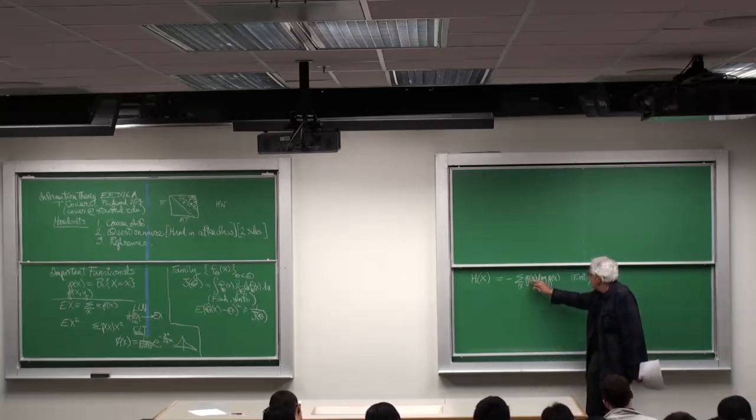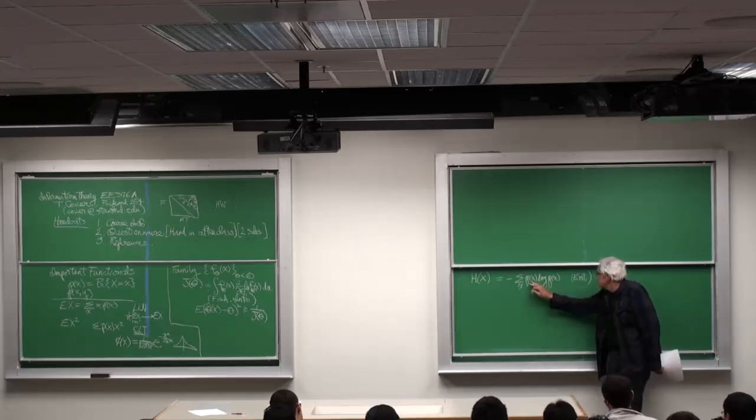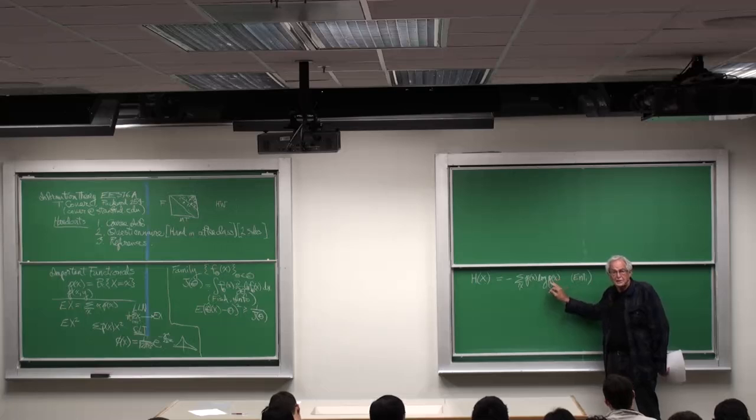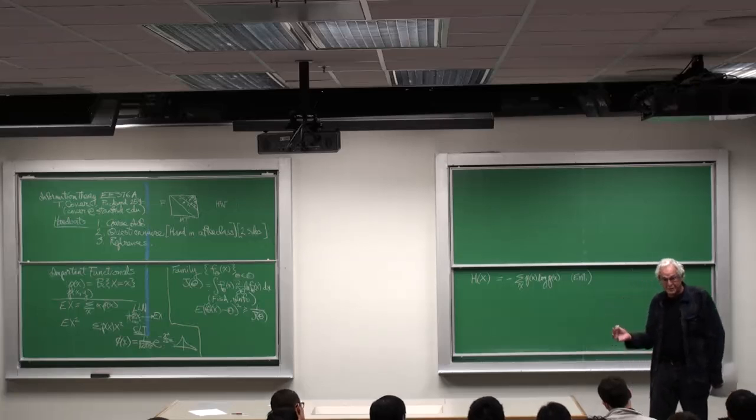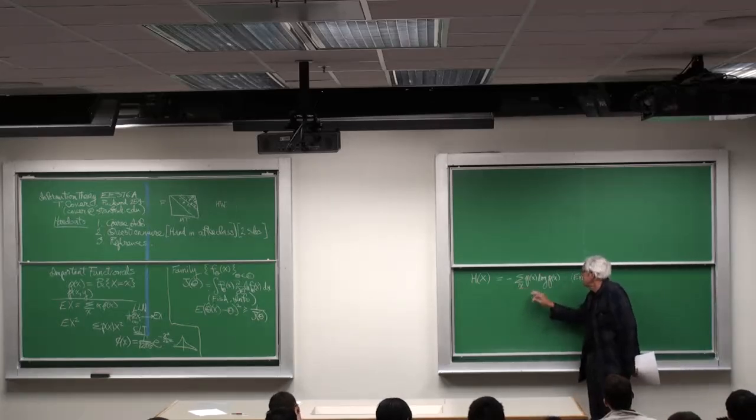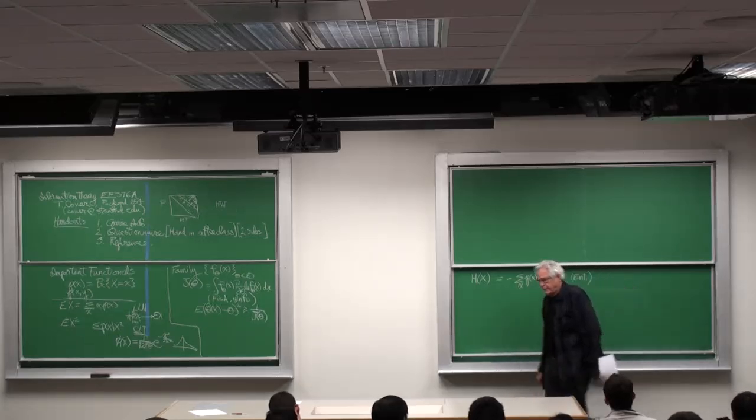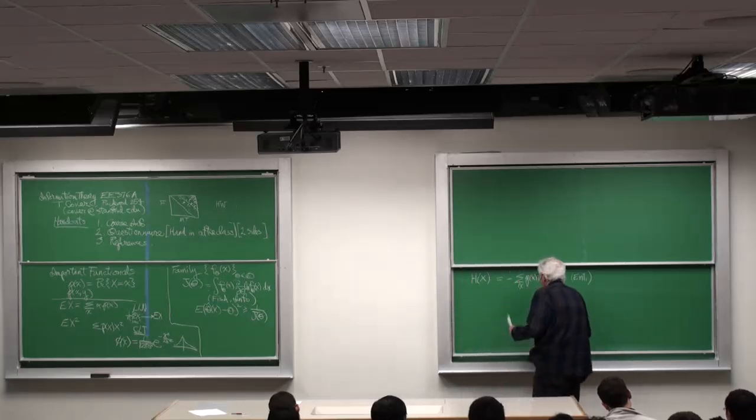So it's not the expected value of x or the second moment, but it's the expected value of the log of p of x. But p of x is the distribution, so this is sort of self-referential. And you're saying, it's the expected value of the log of the distribution with respect to which it's the expected value. All right.